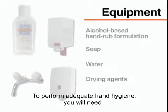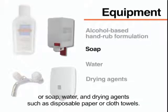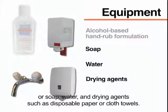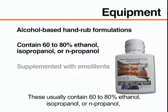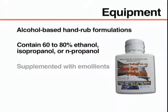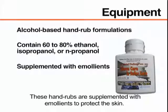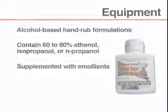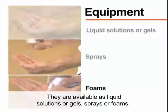To perform adequate hand hygiene, you will need an alcohol-based hand rub formulation or soap, water, and drying agents such as disposable paper or cloth towels. Use alcohol-based hand rubs with proven antimicrobial efficacy. These usually contain 60–80% ethanol, isopropanol, or n-propanol, or a combination of these products, supplemented with emollients to protect the skin. They are available as liquid solutions or gels, sprays, or foams.